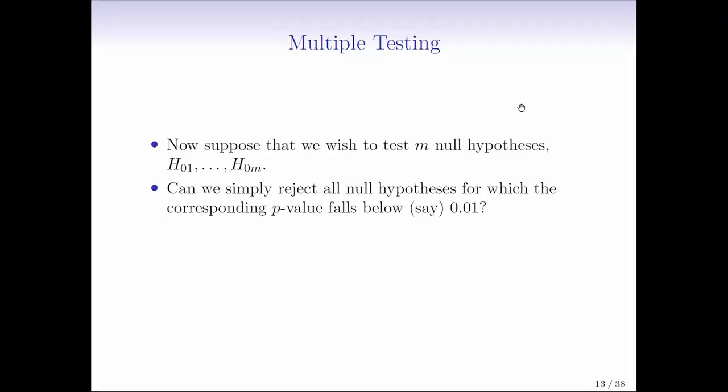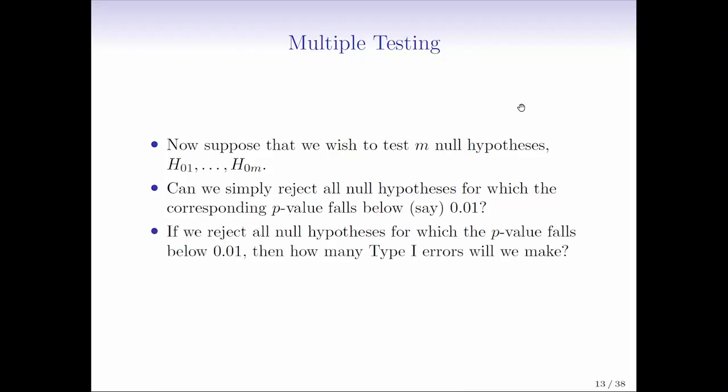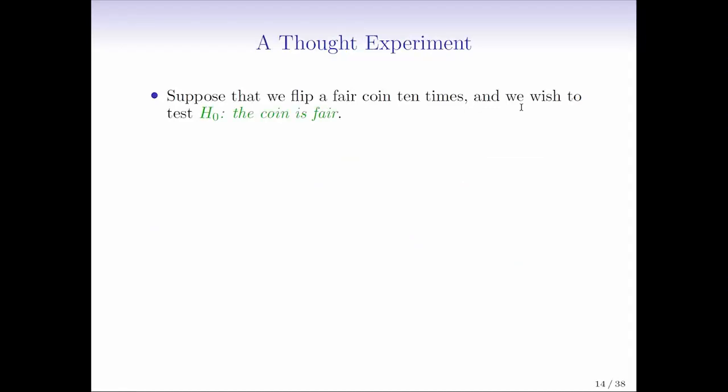So suppose that we simply rejected all null hypotheses for which the corresponding p-value falls below, say, 1%. So what happens if we do that? Then if we reject all of those null hypotheses that fall below 1%, how many Type I errors are we likely to make? A lot. So it turns out if M is large, a lot. And to illustrate that idea, we constructed a little thought experiment here. It's not a very exciting one, but I think it does illustrate pretty clearly the issue that you can run into here.